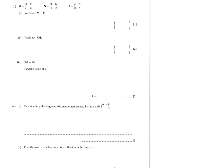Still on question 3B — matrices of order two by two. Work out M plus P. For one point, you just add the corresponding entries. So: 1+1=2, 2+3=5, 3+0=3, and 4+6=10. The result is the matrix with entries 2, 5, 3, 10.